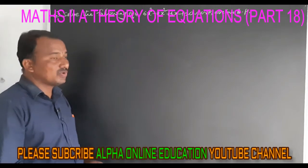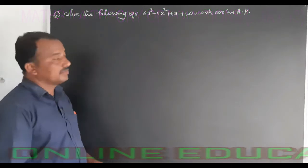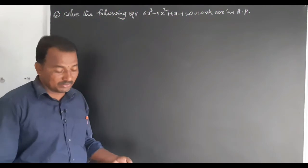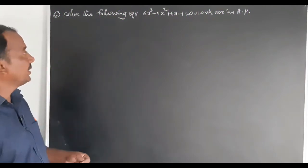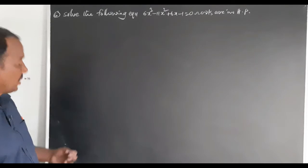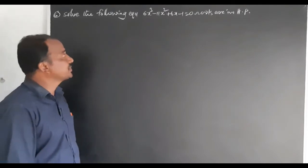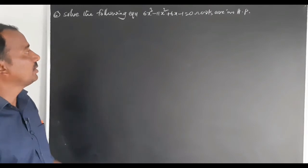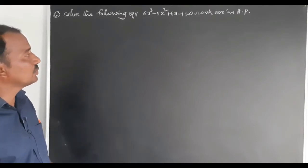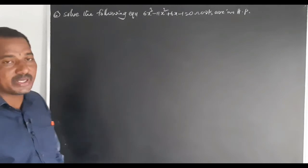Exercise 4b, 6th bit, first problem, long answer question. Solve the following equation: 6x cube minus 11x square plus 6x minus 1 equals to 0. Roots are in HP.